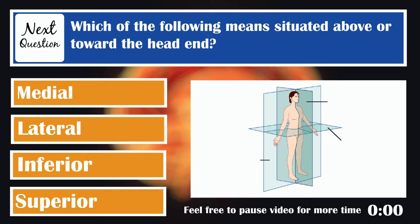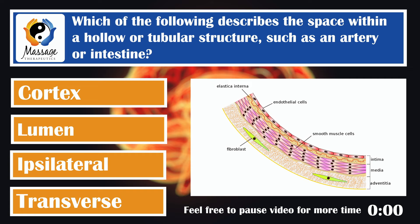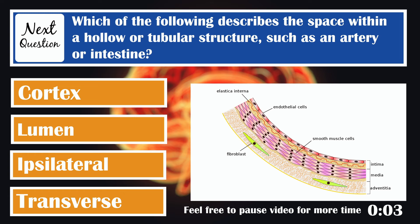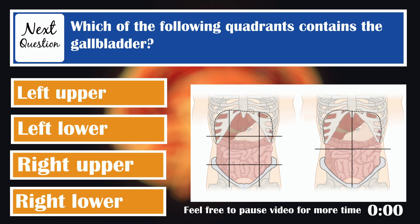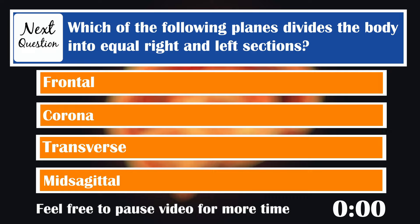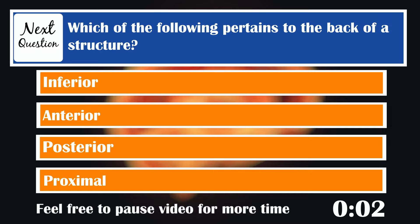Which of the following means situated above or towards the head? Superior. Which of the following describes the space within a hollow or tubular structure such as an artery or intestine? Lumen. Which of the following quadrants contains the gallbladder? The right upper quadrant. Which of the following planes divides the body into equal right and left sections? The midsagittal plane. Which of the following describes the inner region of an organ or structure? Medulla. Which of the following pertains to the back of a structure? Posterior, or dorsal.